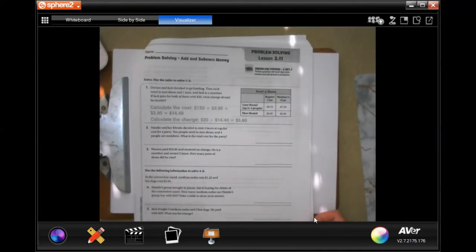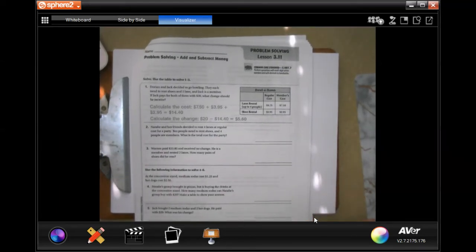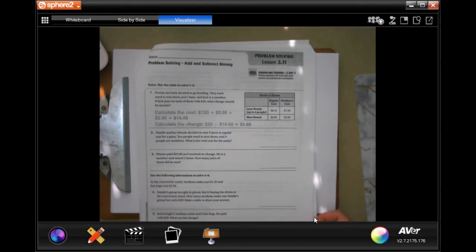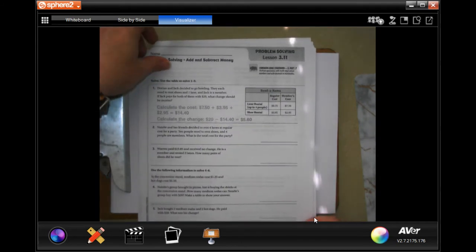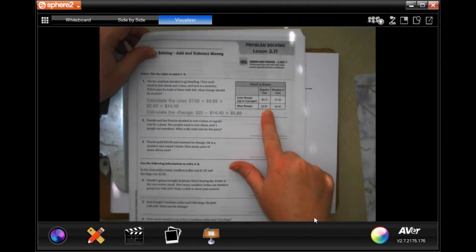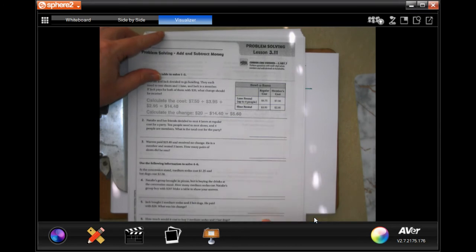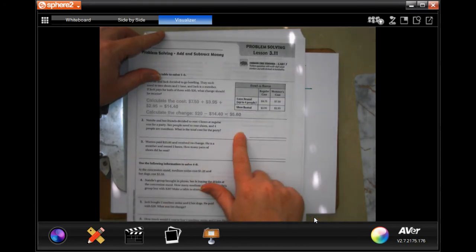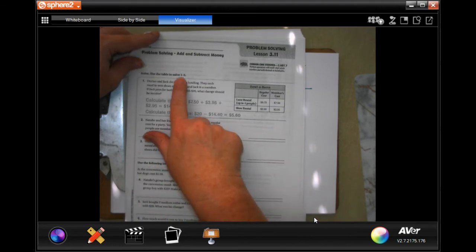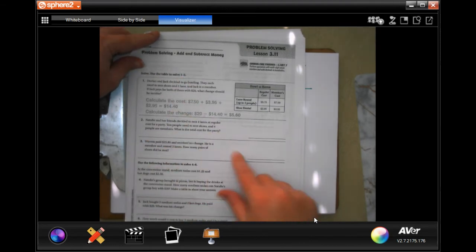Hi guys, welcome to 5th grade chapter 3, lesson 11 on problem solving and adding and subtracting money. Problem solving just means word problem. It's not too bad, guys. So it gives us this chart at the beginning in problem 1, and we're going to use that chart for at least number 2, for 1 through 3. So all 3 of these.